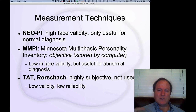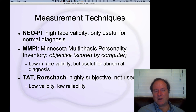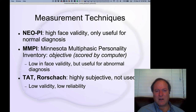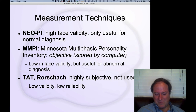The MMPI is more often used for abnormal diagnosis. Then there are earlier things like the Rorschach test — you look at an inkblot and say what it reminds you of, as a way of figuring out your personality. These are low in validity and reliability and are not at all widely used in modern scientific work.